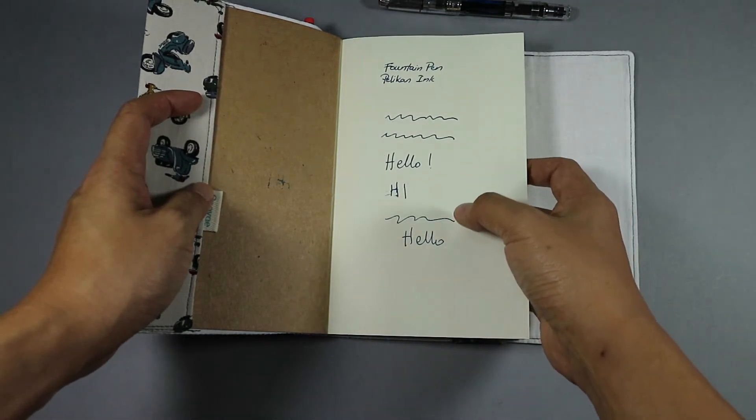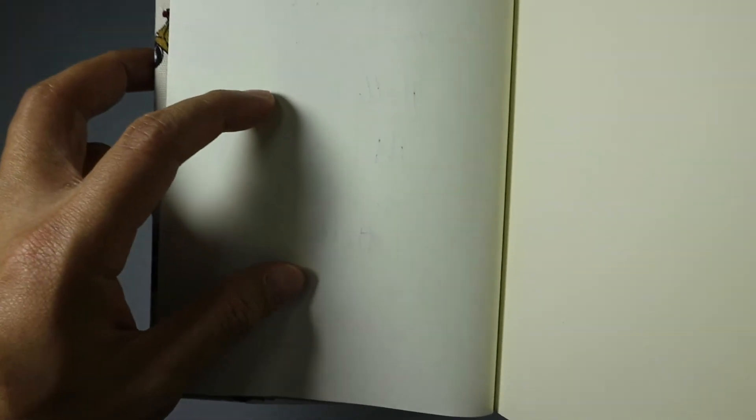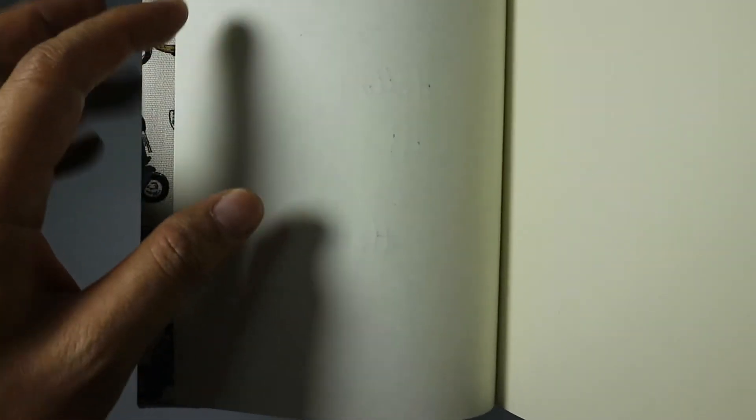I used an M nib for this. Okay, so as you can see, there's very minimal ghosting and very minimal bleed-through, so you can still use the back part.